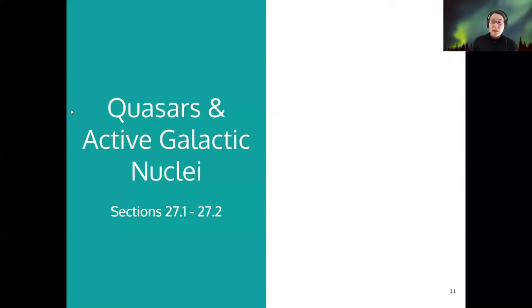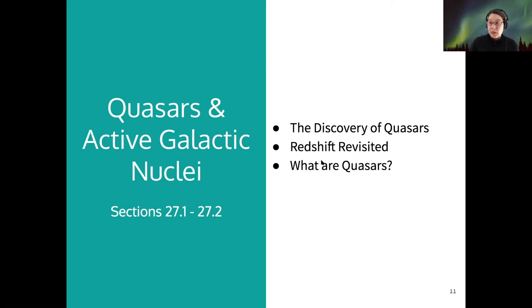Today we're talking about quasars and active galactic nuclei. I'm going to start with the discovery of quasars and lead you through the scientific process and the surprises that were there. We're going to revisit redshift, an idea we've seen before, but in the context of quasars. And then we'll try to answer the question: what are quasars, by coming up with a model and connecting it to all the observational evidence.